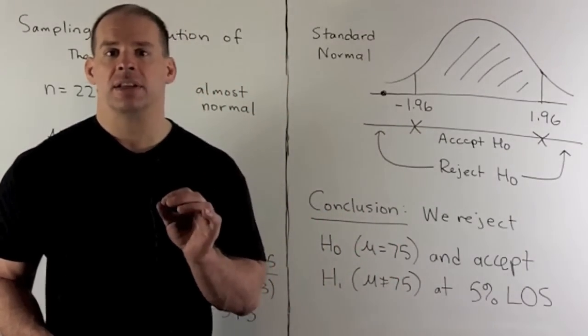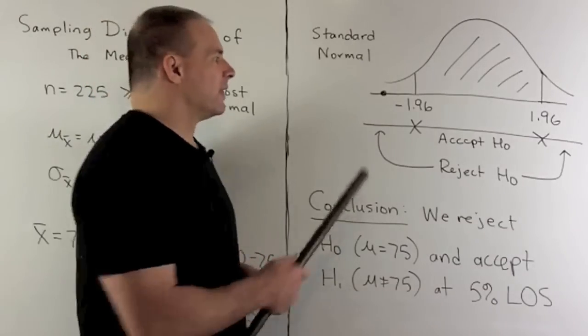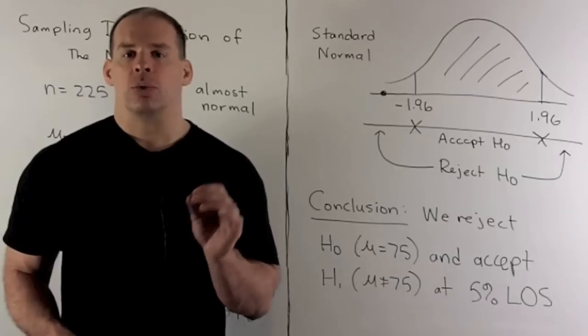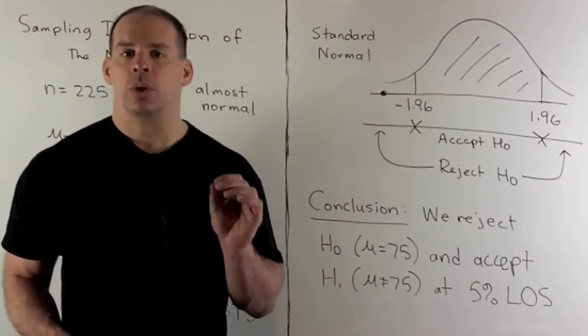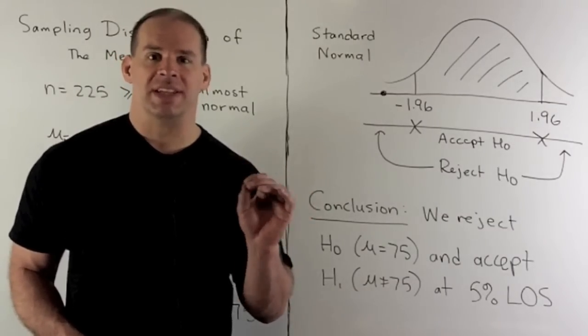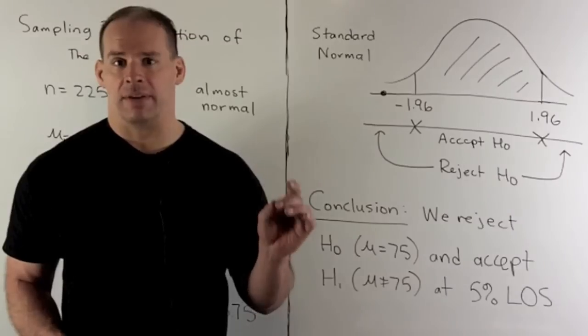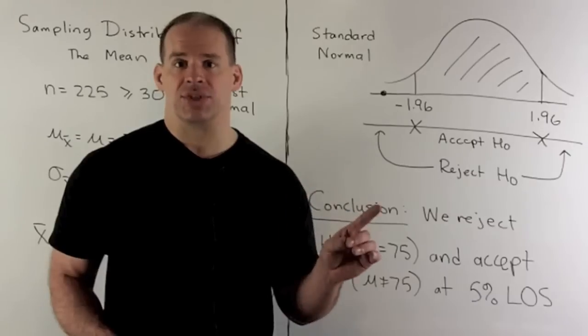We perform our test, z is equal to -3.75. That falls in the rejection region. So our conclusion is, we reject the null hypothesis that μ = 75. And we accept the alternative hypothesis that μ ≠ 75 at a 5% level of significance. That means the professor is going to curve the grades.